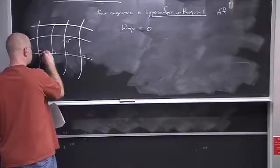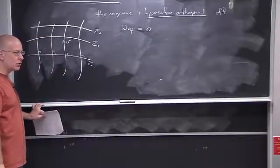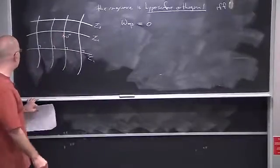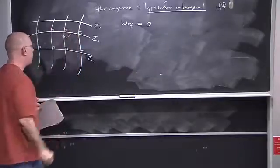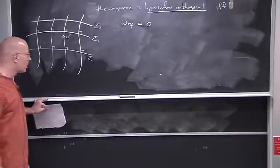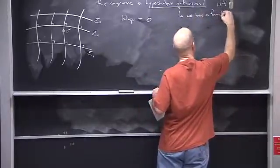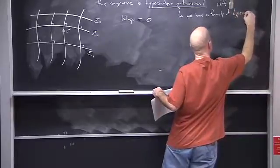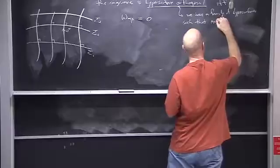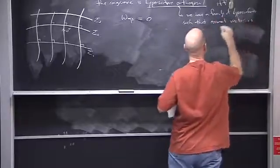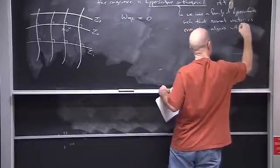The construction is such that you have hypersurfaces sigma one, sigma two, sigma three — a whole stack of hypersurfaces at every point in the open region in which the congruence is defined. At every point, the normal to the hypersurface is aligned with u. So we have a family of hypersurfaces such that the normal to the hypersurface is everywhere aligned with the tangent vector field.